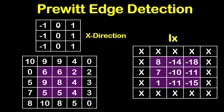Again we will multiply and add: 9×(−1) + 9×0 + 4×1 + 6×(−1) + 6×0 + 2×1 + 9×(−1) + 8×0 + 4×1. This will result in negative 40. And so on for all pixels in the highlighted region.